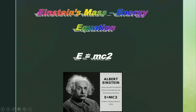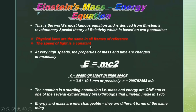Einstein's mass-energy equation: E = mc². This is the world's most famous equation and is derived from Einstein's revolutionary special theory of relativity, which is based on two postulates: first, physical laws are the same in all frames of reference; second, the speed of light is a universal constant. At very high speeds, the properties of mass and time are changed dramatically.